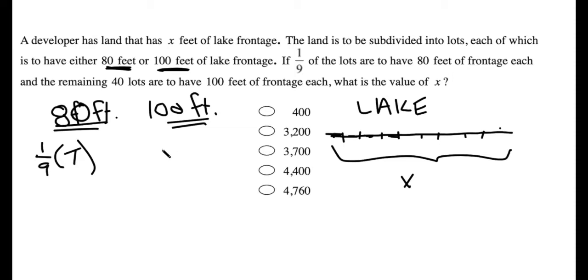Before I go any further, I'm just going to say that means that eight-ninths of the lots are 100-foot lots. Because if one-ninth are the first type, that means that the remainder must be the second type, eight-ninths.